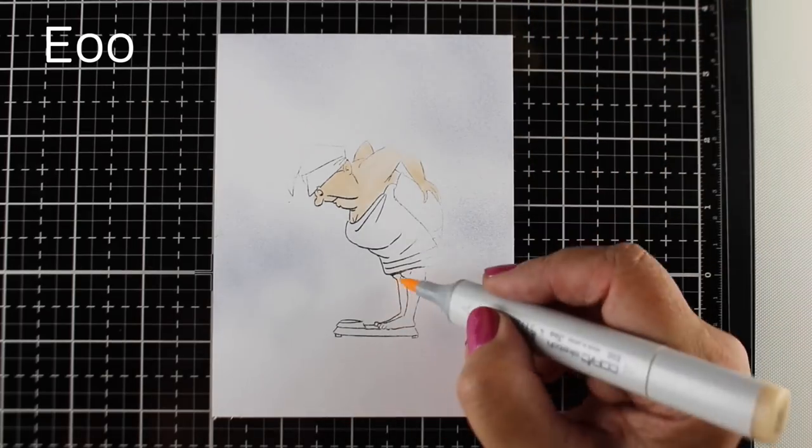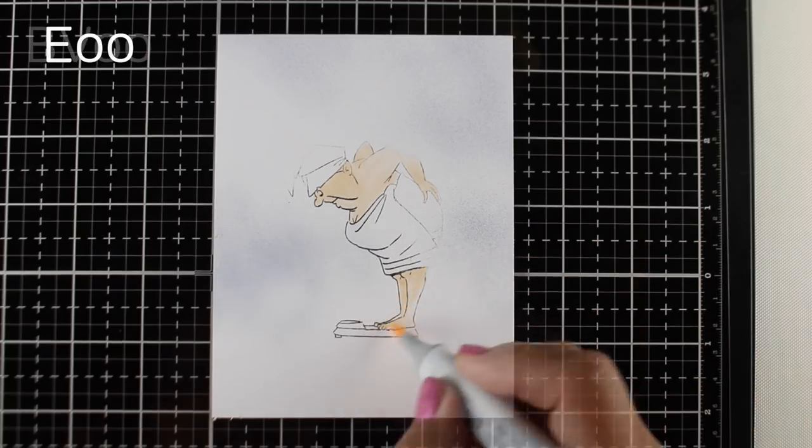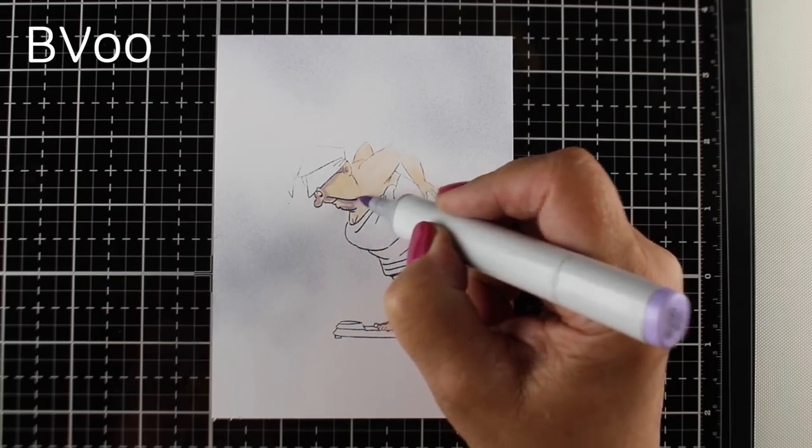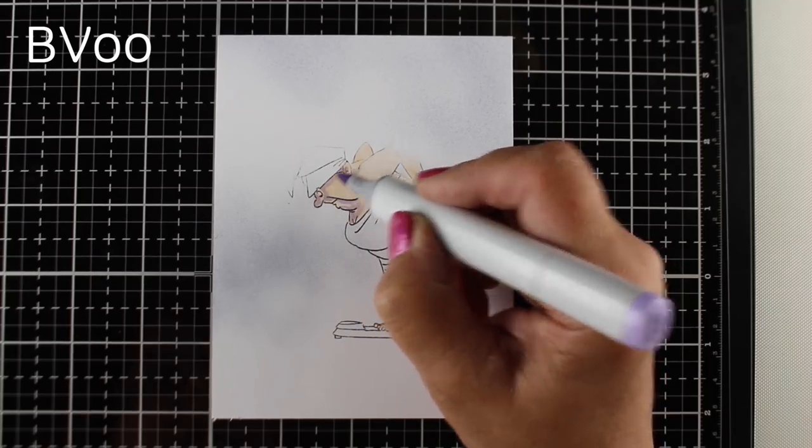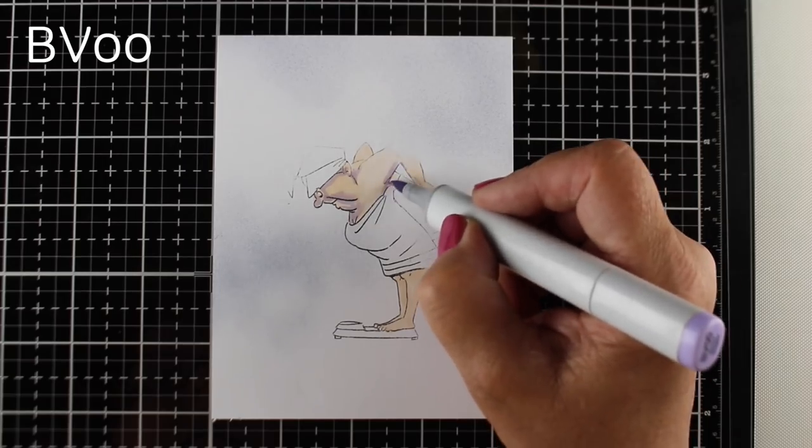I'm using an E00 for her base body color. If you're new to trying to blend into white, you might want to use an E000, 000, something really light as you get out into that area right at the edge. But I found that just flicking my E00 worked fine.